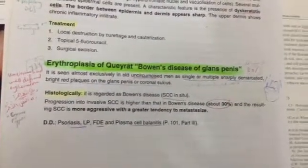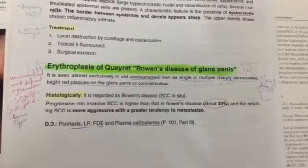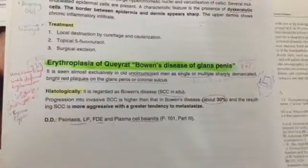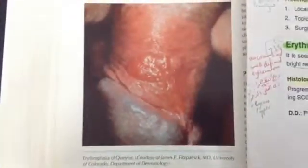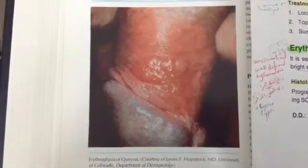Differential diagnosis includes psoriasis, lichen planus, fixed drug eruption, and plasma cell balanitis. This is the clinical picture of erythroplasia of Kira, or Bowen's disease of the penis.